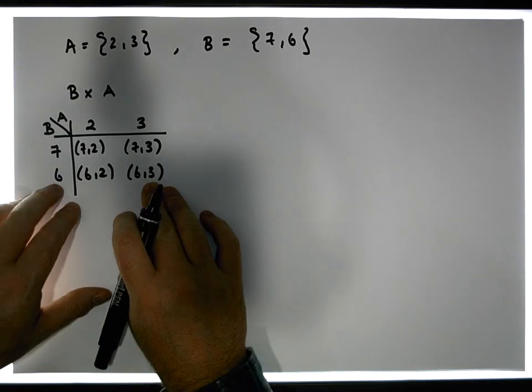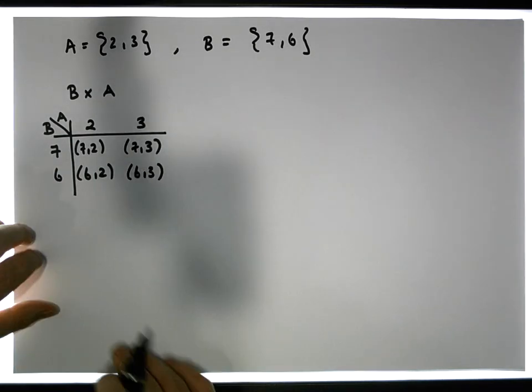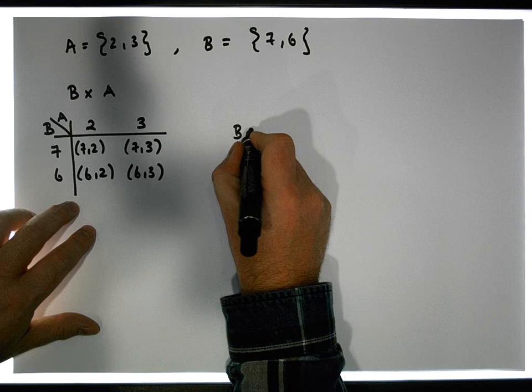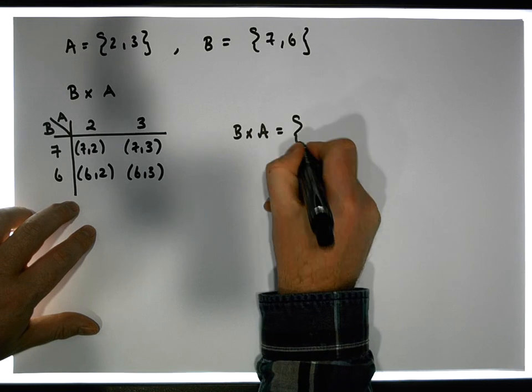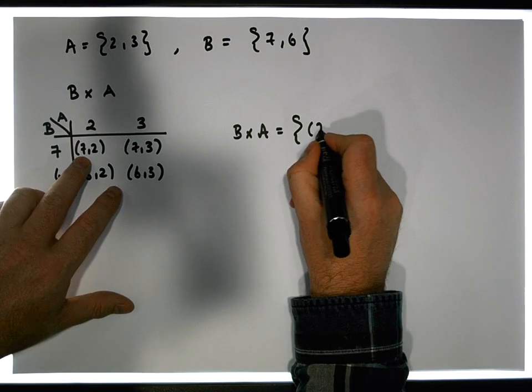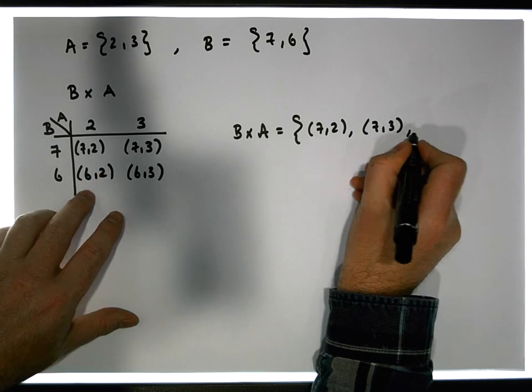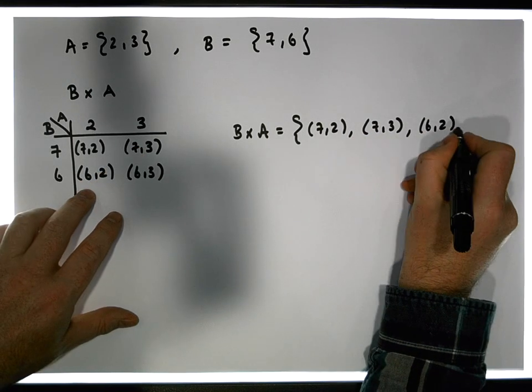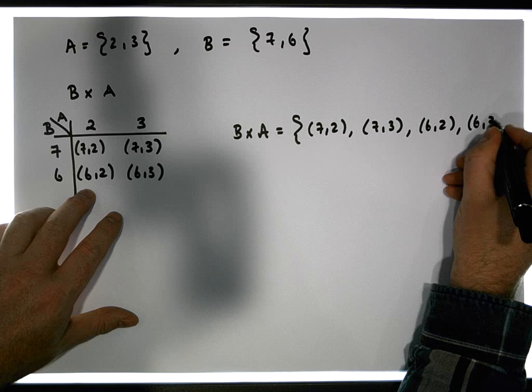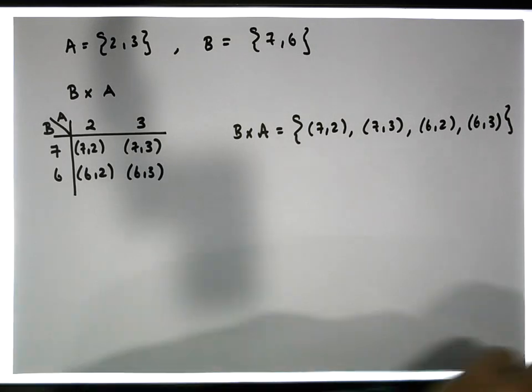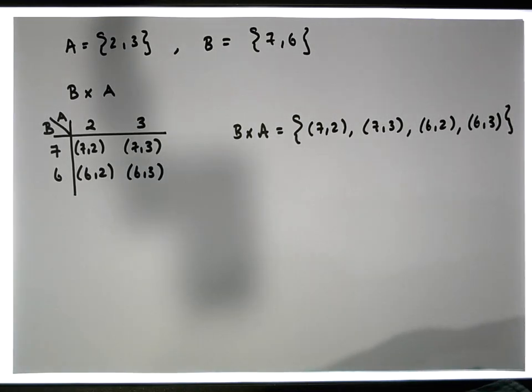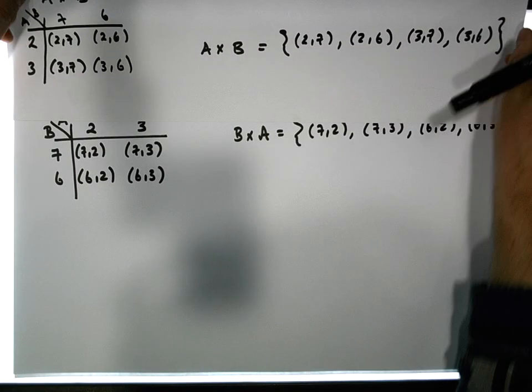Now, that's not the cross product. That's just the elements that are in the cross product. The cross product, B×A, is the set that contains these ordered pairs. So it contains (7,2), (7,3), (6,2), and (6,3). There's an important thing here that hopefully we notice is that when we look at the cross product of...